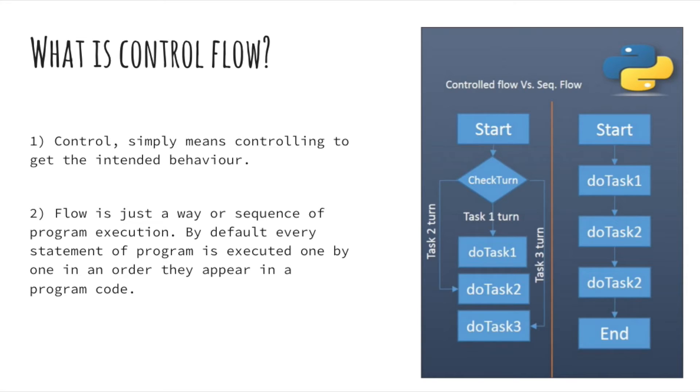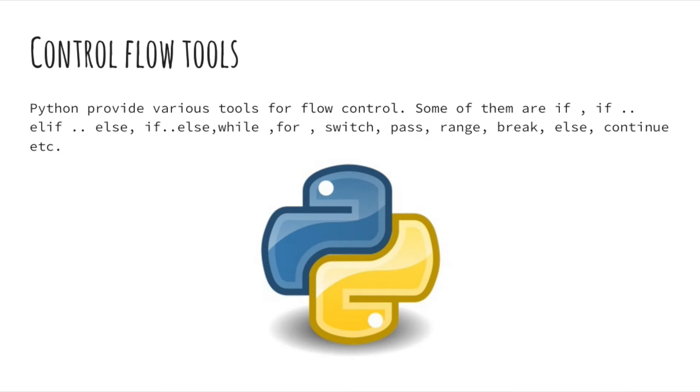For example if you want the program to make a decision and do different things depending on different situations such as printing good morning or good evening depending on the time of day. So now we know what control flow is but how do we implement this?